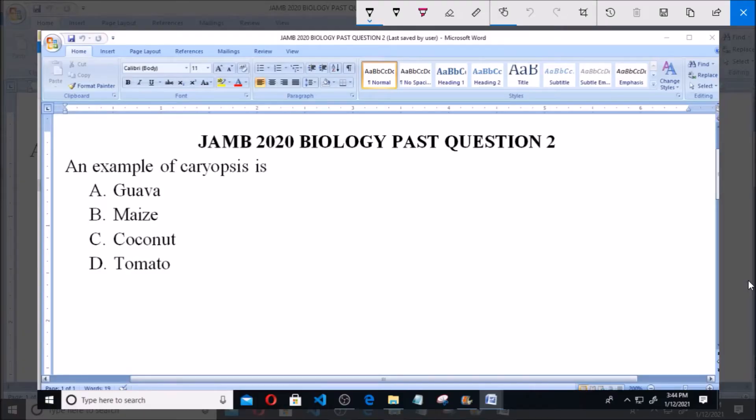Hello, good day and welcome. I'll be answering JAMB 2020 Biology past question 2. An example of caryopsis is: A) Guava, B) Maize, C) Coconut, and D) Tomato. Now, a caryopsis is one of the types of dry indehiscent fruits.